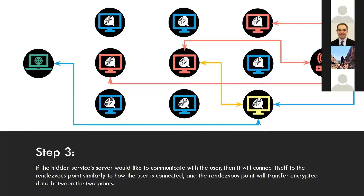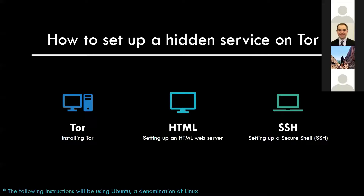Assuming the server wants to connect — otherwise the connection ends — the server goes through a similar process as the user, running through a Tor circuit into the rendezvous point. Both parties communicate over the rendezvous point completely anonymously, and the user can now access the hidden service's site.